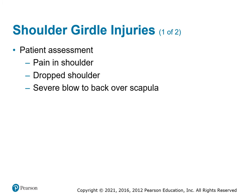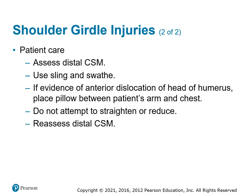Shoulder girdle injuries: first do a patient assessment — the shoulder is typically going to be dropped, one shoulder lower than the other, which is an indication of injury. It's either a fracture of the top of the humerus, fracture of the scapula, or the clavicle — something in that shoulder girdle. Check your CSM. Treatment is pretty simple: put the arm in a sling and then use a swath to secure it in place. You might want to put a pillow between the arm and chest if you want to raise the arm up — if that feels better. With everything we do to the patient, ask them if it feels better, and if it doesn't, adjust.